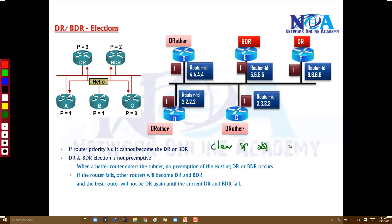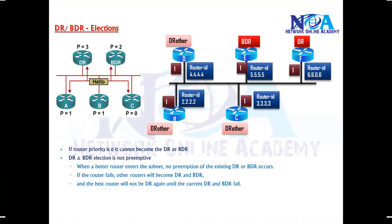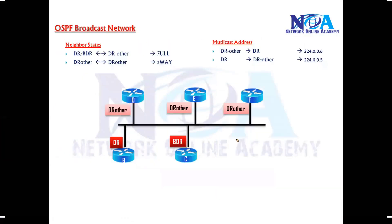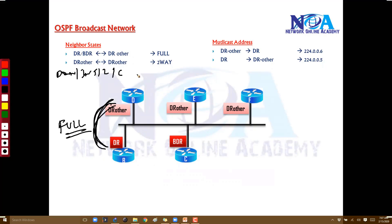If you want to force a reelection, you can use the 'clear IP OSPF process' command, which resets all routers, clears the process, and triggers a new election. Also, in OSPF networks the neighbor relationship between the DR and other routers progresses through all seven stages — down, initialized, two-way, exstart, exchange, loading, and full.